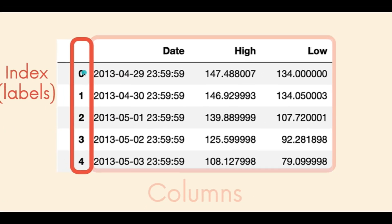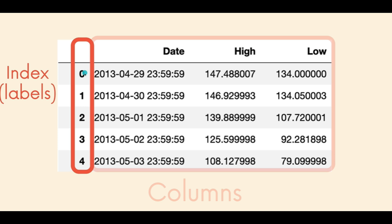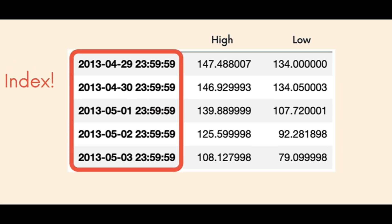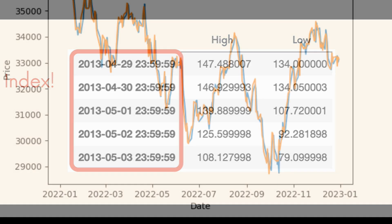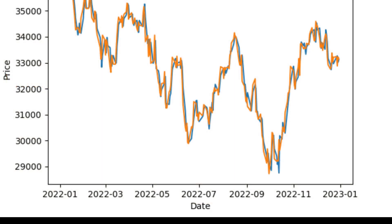Let's look at a key parameter in data frames called index. By default, it's an incremental number that's used as a reference for a row. However, we can change the index to a value or parameter that is more meaningful in the context of a data frame, especially when it's a time series data frame.